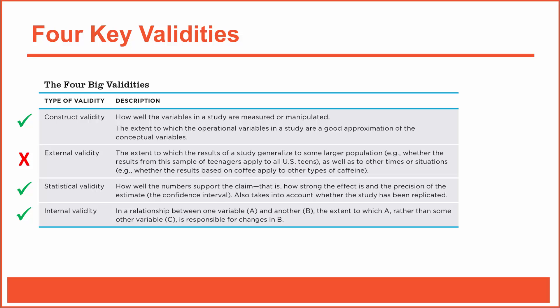By the way, it's a good idea to commit these four types of validity to memory. I tend to remember the four key validities in this order: internal, external, statistical, construct. The first letters of each validity spell out I-E-S-C. I-E-S-C isn't an actual word, so that's not necessarily a very good memorization strategy, but it seems easy to recall the words internal and external, and from there the letters I-E-S-C form a nice pattern that sounds good, at least to me. We'll discuss each of these validities in more detail in the next few videos.